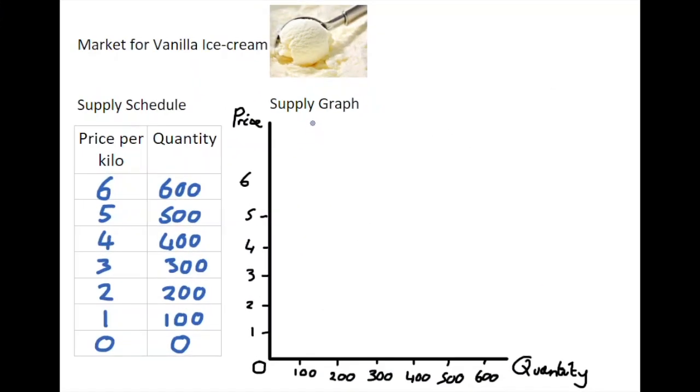Okay guys, so in this video we're going to look at the concept of supply and we're going to look at it through the market for vanilla ice cream. Just like with demand, this is a generic market. Therefore, in terms of suppliers, there are a large number of them. Again, they wouldn't be able to control or dictate price in that market.